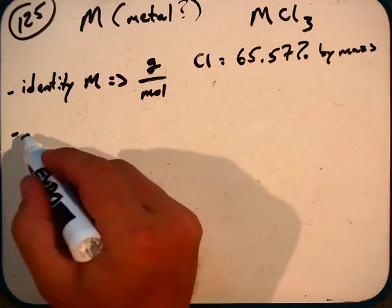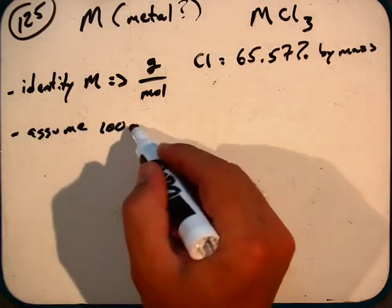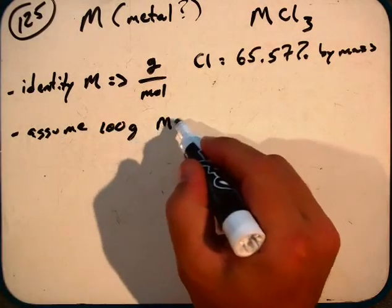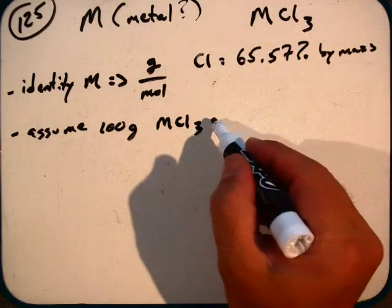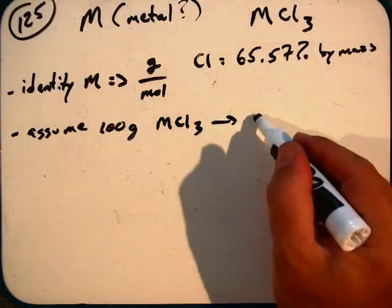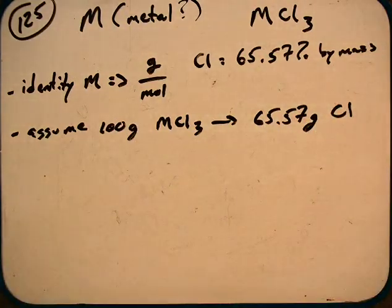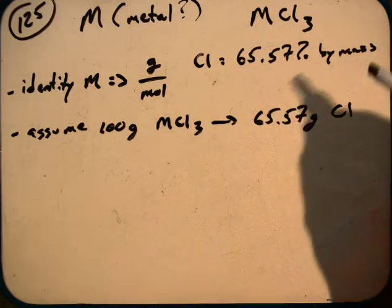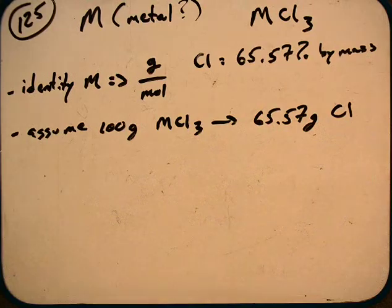And so in order to do that, we need to make an assumption. We need to assume 100 grams of MCl3. Because if we do that, then that means that we have 65.57 grams of Cl if we assume we have 100 grams of sample. So that allows us to take this percentage, which is based on 100, to get rid of the percent and actually just use mass, because we're in 100 grams.